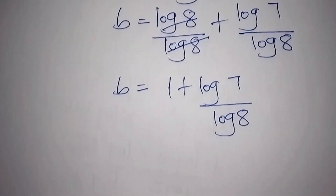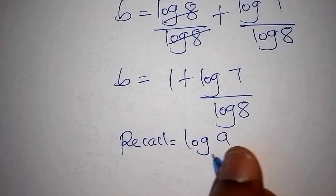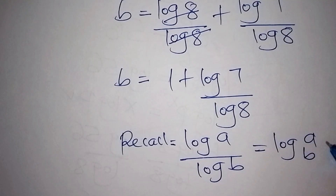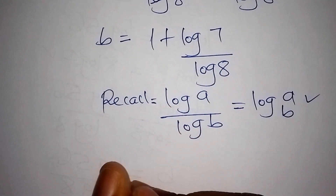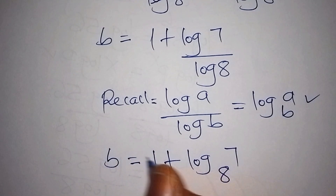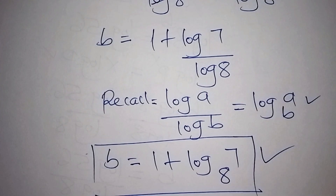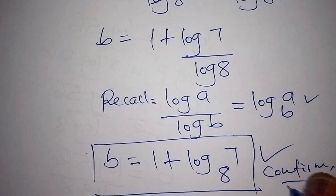Recalling that log a over log b can be written as log of a to the base of b, we can write our answer as b equals 1 plus log of 7 to the base of 8. This is now our correct answer. We can still recheck it by confirming and seeing if that is what we are supposed to get.